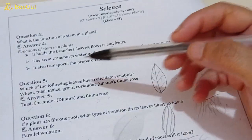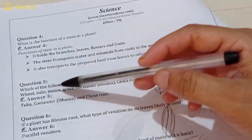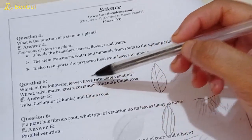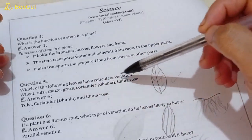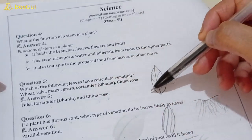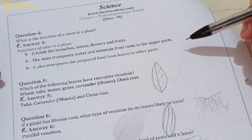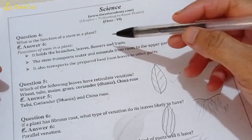Question number five: which of the following leaves have reticulate venation? Wheat, tulsi, maize, grass, coriander (dhaniya), China rose. In which of these is reticulate venation found? Reticulate venation, you are seeing this diagram, when leaves have this type of lines, we call it reticulate venation. So tulsi, coriander and China rose have reticulate venation.